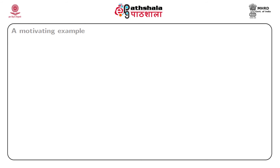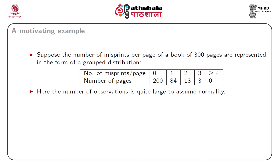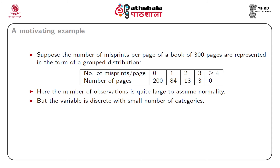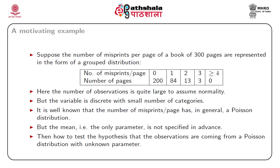Consider a motivating example: the number of misprints per page of a book of 300 pages is represented in a grouped distribution with classes 0, 1, 2, 3, or 4 or more misprints per page and corresponding frequencies given. The number of observations (300) is quite large. The variable is discrete with a small number of categories. It is well known that the number of misprints per page generally follows a Poisson distribution, but the mean — the only parameter — is not specified in advance. The question is how to test whether the observations come from a Poisson distribution with unknown parameter.